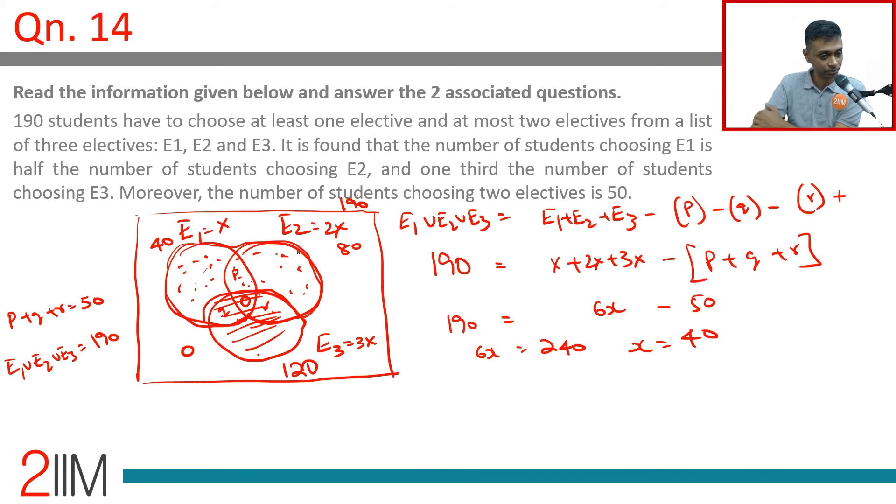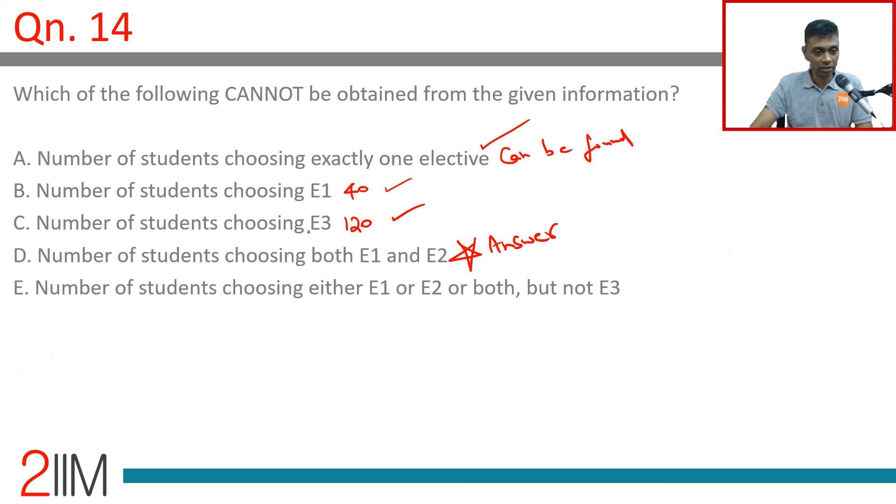E1 union e2. E1 union e2 but leaving out e3. E3 is 120, total is 190, remaining here would be 70. So we can find that remaining part. E1 union e2 but not e3, that component can be found. This also can be found.